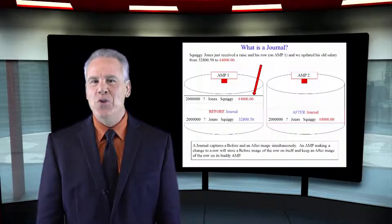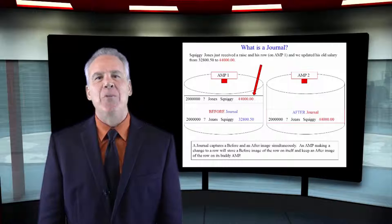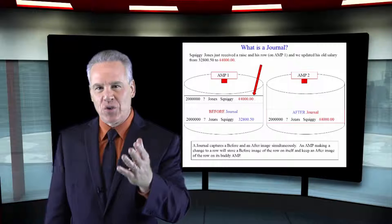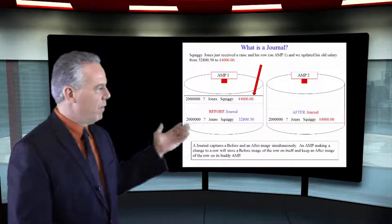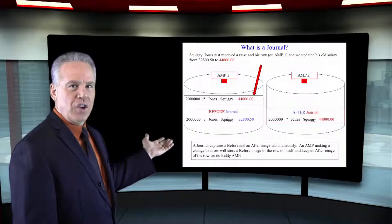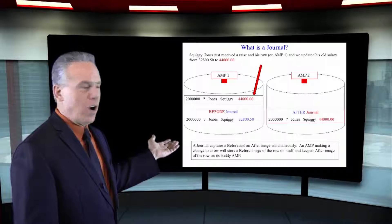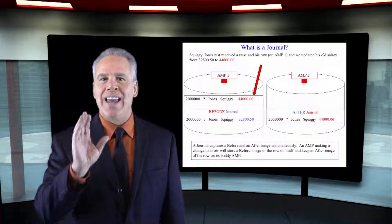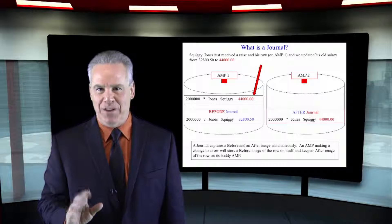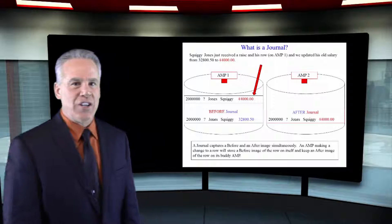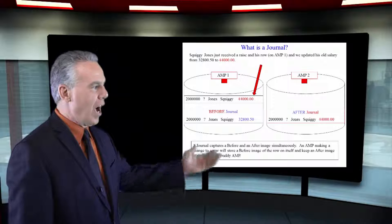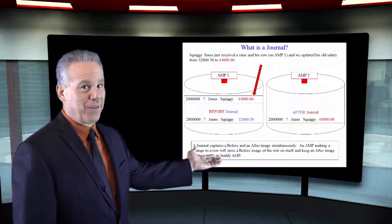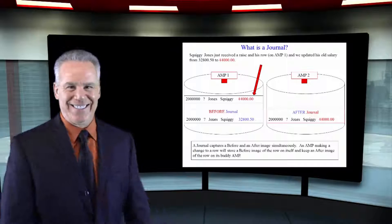When you create a table and just say you want a journal, it's going to store a before image of any changed row on the same amp, and it's going to store an after image of any changed row on its buddy amp in a different node, in a different clique.